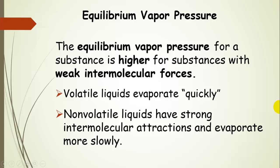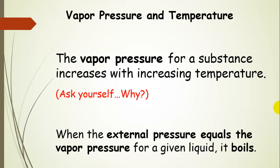The equilibrium vapor pressure is higher for substances with weak intermolecular forces. If intermolecular forces are weak, it's easier for molecules to escape into the gas phase, so more molecules enter the gas phase and the equilibrium vapor pressure is higher. Volatile liquids are the kind of liquids that have weak intermolecular forces and evaporate quickly — think of gasoline as an example. Non-volatile liquids have strong intermolecular attractions and evaporate more slowly.